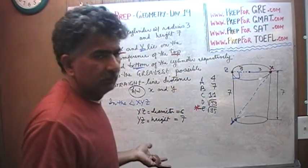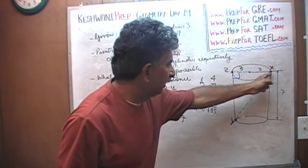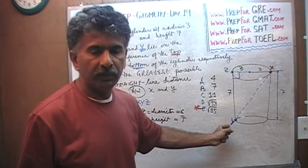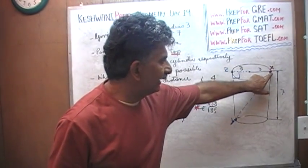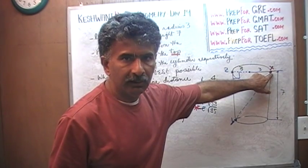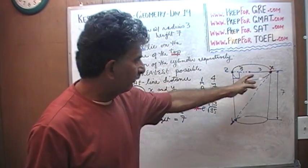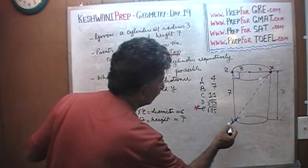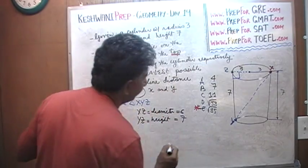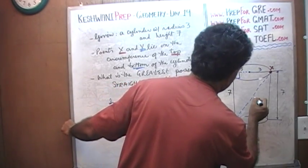So it's a simple right angle triangle where this side happens to be 6, X to Z happens to be 6, and this side happens to be 7. We just use the Pythagorean theorem and figure out the largest possible distance from X to Y. This is where they're going to be farthest apart, when one point is at the other end of the cylinder, as far apart as is possible. The other end is here and it forms a right angle triangle.